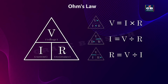Mathematically, Ohm's Law is written as V equal to I into R, or I equal to V by R, where V is the voltage, I is the current, and R is the resistance. So, if you know any two of these values, you can calculate the third one.